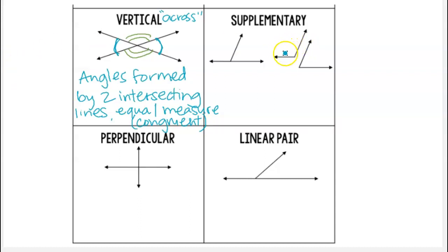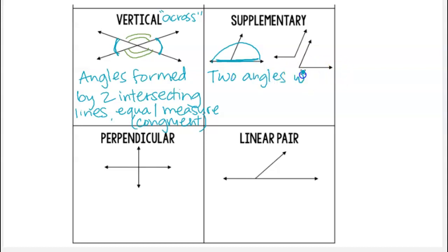The next pair of angles is supplementary. On our supplementary angles we have a straight angle, although it is made up of two separate angles. If you recall, straight angles are measured at 180 degrees. So supplementary is two angles whose sum is 180 degrees. These angles also can be adjacent or non-adjacent.